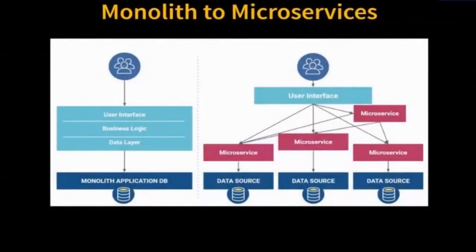Now, why did we do this? When we had a monolith, all of the things were packaged together so that we could deploy it easily because deployment was hard. Containers have solved this and now we can deploy really easily. So we end up with lots of little pieces that can be deployed and upgraded and replaced really easily.